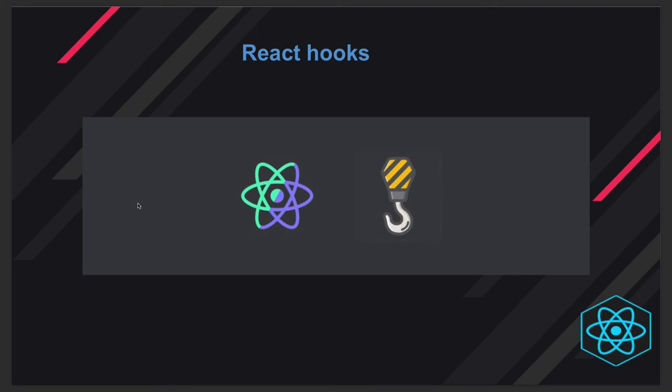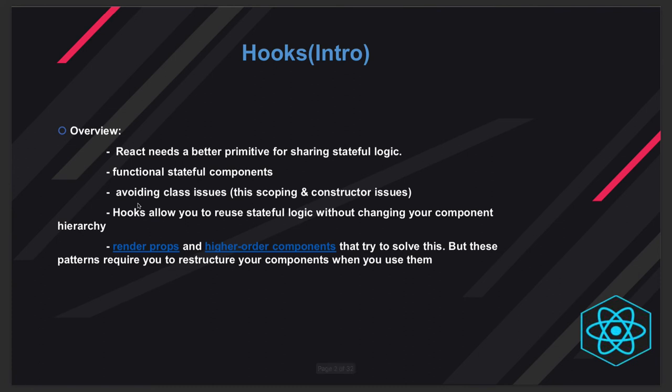Hooks means earlier we were not managing state — now we can manage state. Earlier we were not able to fetch API data and manage it through lifecycle methods — now we are able to do it. There are different ways of managing state using different kinds of hooks provided, like useState, useEffect, useReducer, useMemo, and useRef.